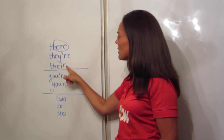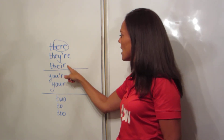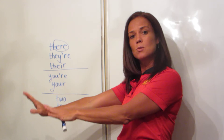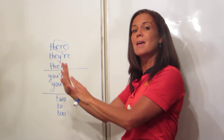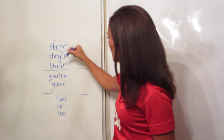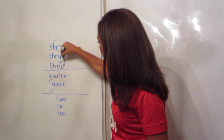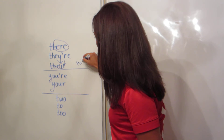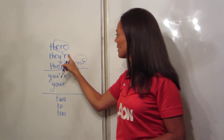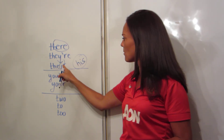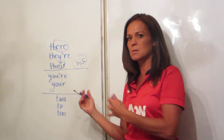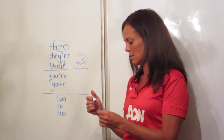This 'their' with T-H-E-I-R is possession — it is belonging to them, so it is theirs. You're going to remember that because of the I in it. There's an I in 'his.' When you see the 'their' with an I, think of 'his,' so it's possession. It's theirs.